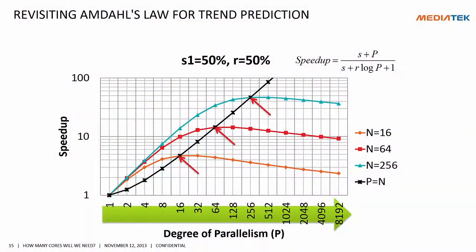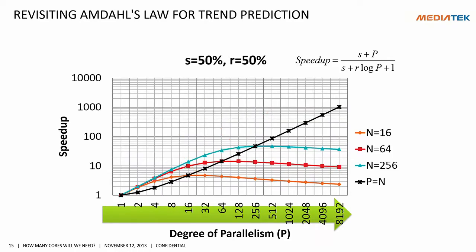If we really want to do trend prediction, what we should do is connect all the decision points across the curves. Then we see a different curve. Let me show the curve at full range — remember, the speedup is on a log scale. So a straight line in a log scale diagram actually represents an exponential curve. This means that speedup can really grow exponentially as long as your problem size scales with the number of cores. It's really up to our choice.